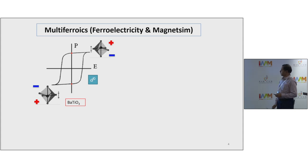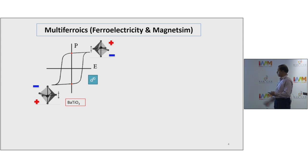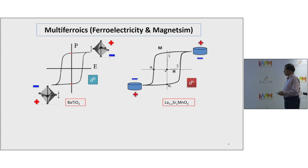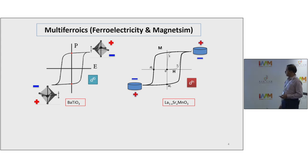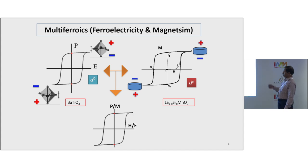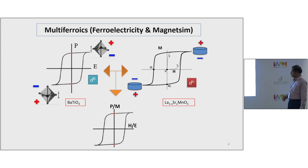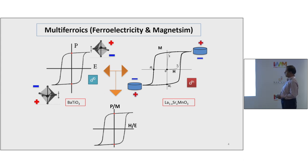Multiferroic basically combines two properties: ferroelectricity and magnetism. Barium titanate with the D0 ion gives you ferroelectricity — a typical PE loop. For magnetism you need partially filled D electrons, like in strontium manganate. We want to combine these two properties in a single material so that we have additional degrees of freedom — for example, applying a magnetic field to manipulate polarization, or applying an electric field to manipulate magnetization.